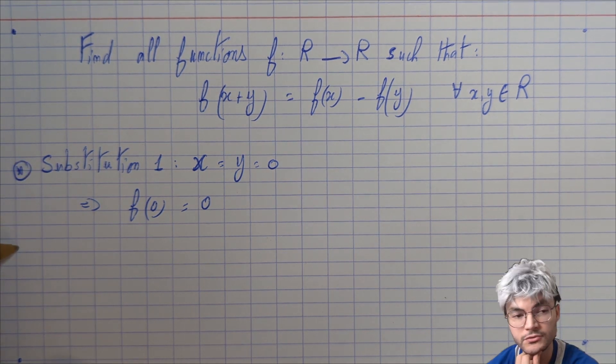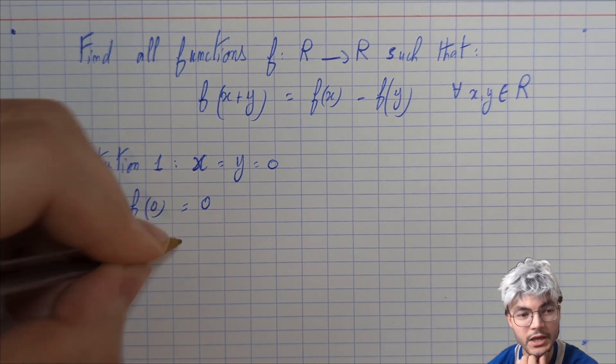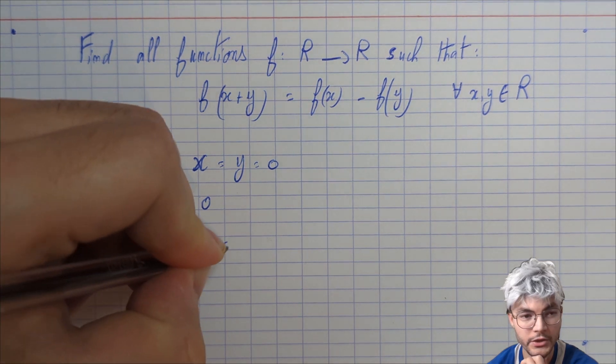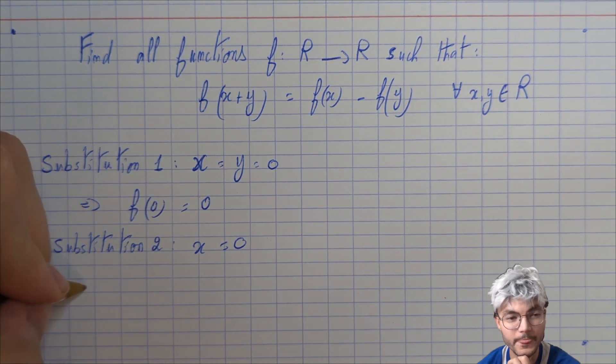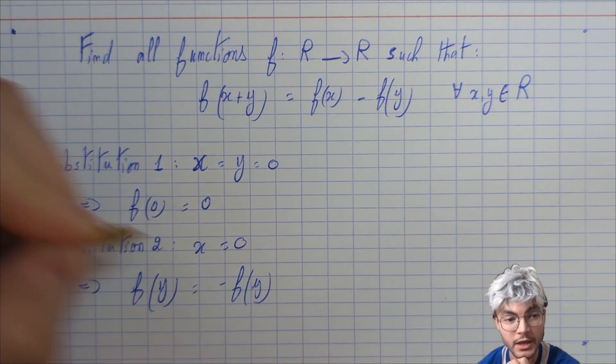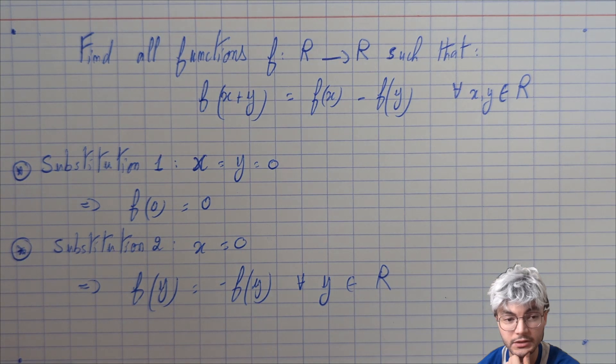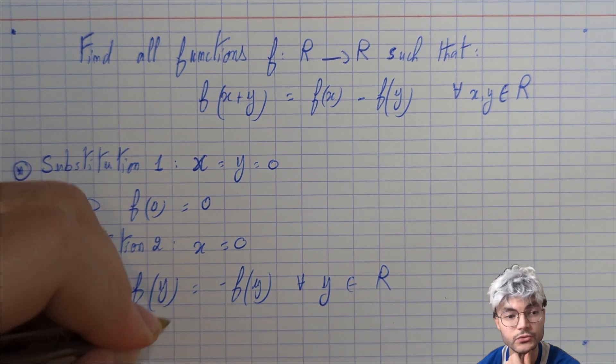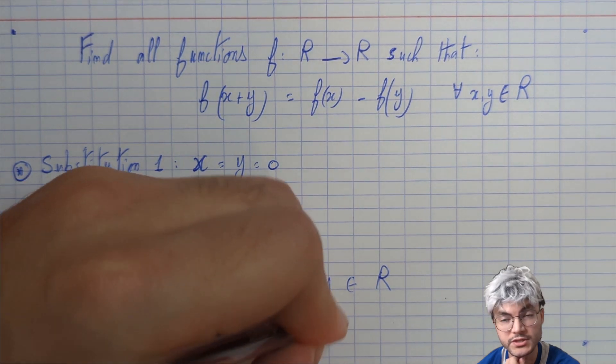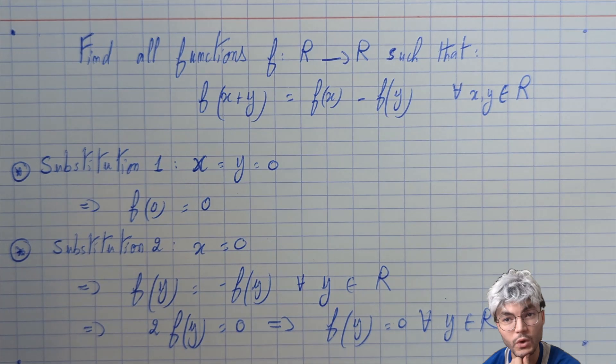To take advantage of this result, I'm gonna have a second substitution in which I put x equals 0. This way I have f of y equals f of 0 which is 0 minus f of y, which is equivalent to 2 f of y equals 0 for all real numbers y.